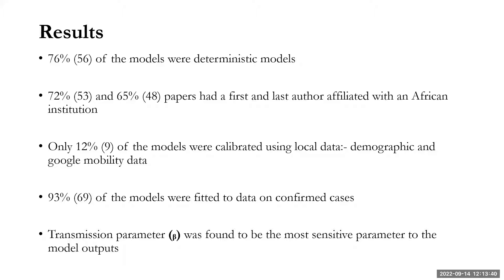On model structure, 76% of the models were deterministic in nature, meaning stochastic models representing randomness within the population were underrepresented. Seventy-two percent and 65% had a first and last author affiliated to an African institution respectively. Only 12% of the models were calibrated using local data such as demographic data and Google mobility data. With regards to model fitting, 93% of the papers were fitted to data on confirmed cases, and the transmission parameter beta was found to drive the most sensitivity within the model output.